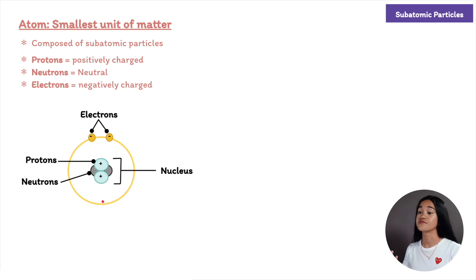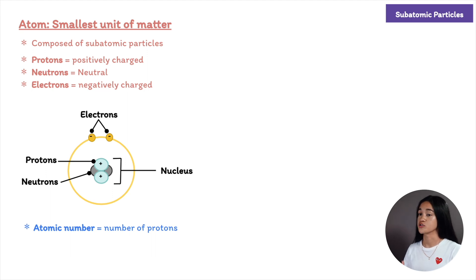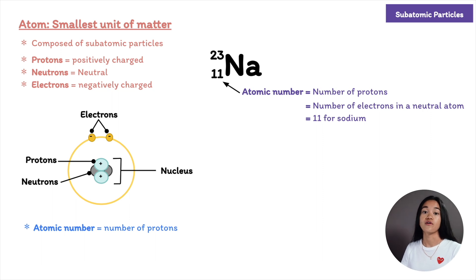All atoms of a particular element have the same number of protons in their nuclei, which is unique to that element. The number of protons is called the atomic number, and we write it as a subscript to the left of the element symbol. For example, sodium has 11 protons in its nucleus. Unless indicated otherwise, an atom is neutral in electrical charge, meaning there are the same number of electrons as protons.